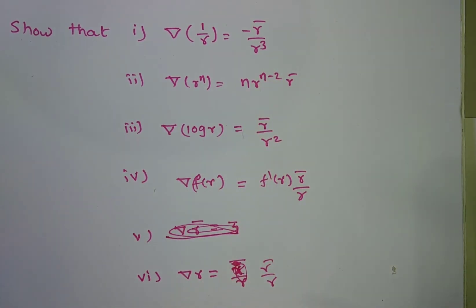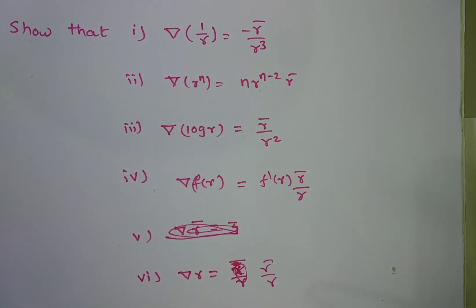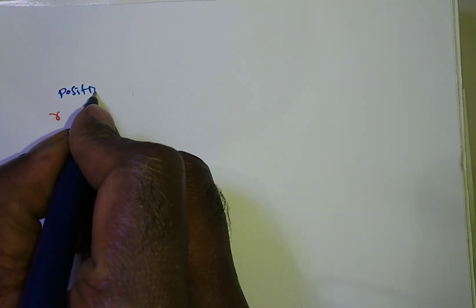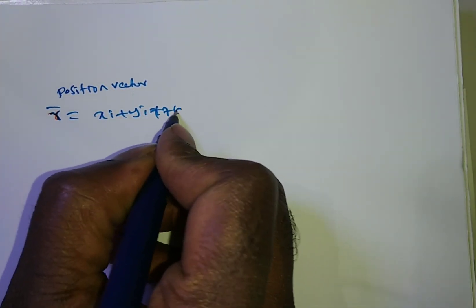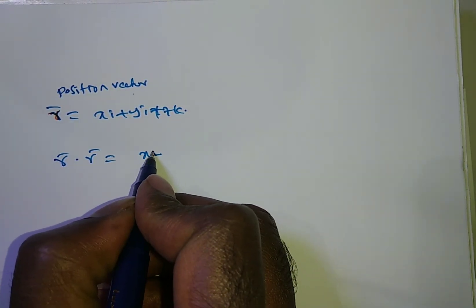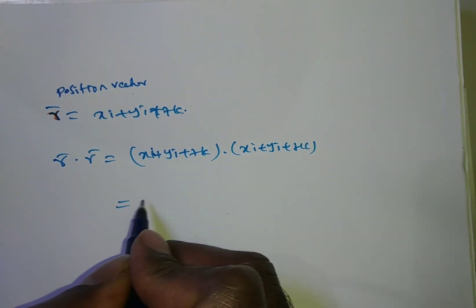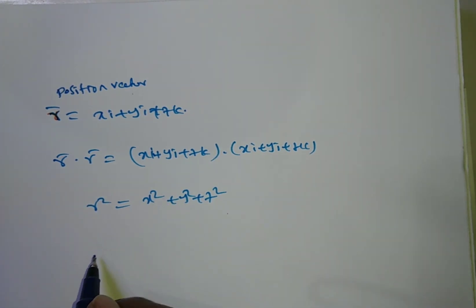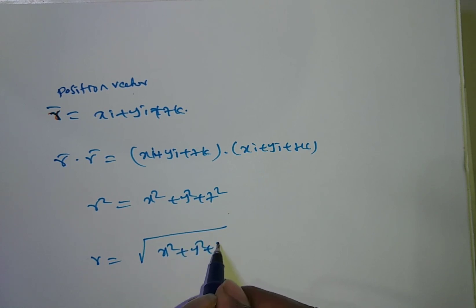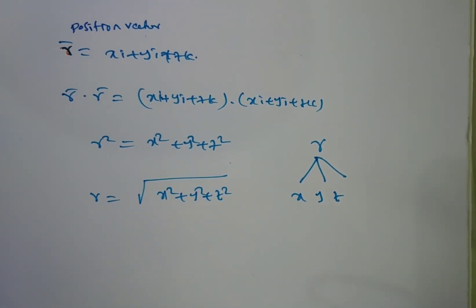Before solving this, we have to know some basic concepts. First, what is the position vector? Later, what is the r value? Based on that only you can do the derivatives and find these values very easily. The position vector r̄ is equal to xi + yj + zk. Now, r̄ · r̄ = (xi + yj + zk)·(xi + yj + zk) = x² + y² + z², which equals r². So r = √(x² + y² + z²), and r is a function of x, y, z, so we can differentiate partially.